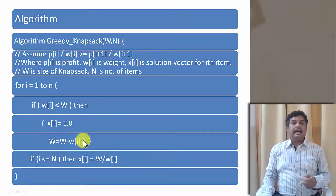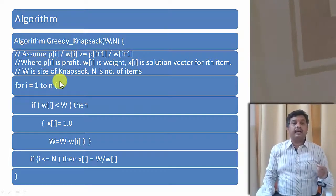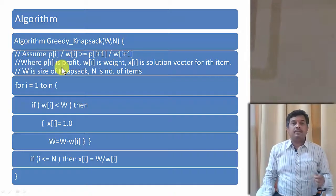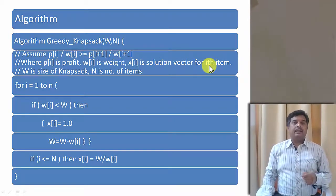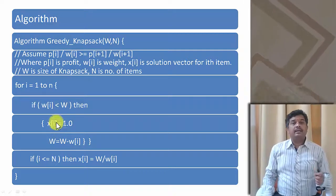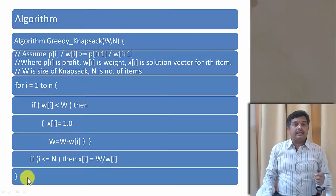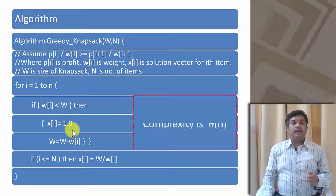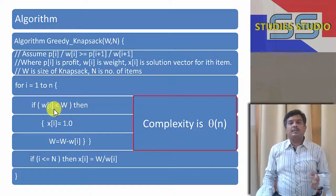Now let us look at the greedy knapsack algorithm. We assume the items are already sorted in decreasing order of profit-to-weight ratio, where pi is the profit, wi is the weight, xi is the solution vector for item i, W is the knapsack capacity, and n is the number of items. For i from 1 to n: if the weight of item i is less than the remaining knapsack capacity, set xi = 1 and reduce the knapsack size by wi. If i ≤ n, set xi = remaining capacity / wi. Since there is only one for loop, the time complexity is Θ(n).